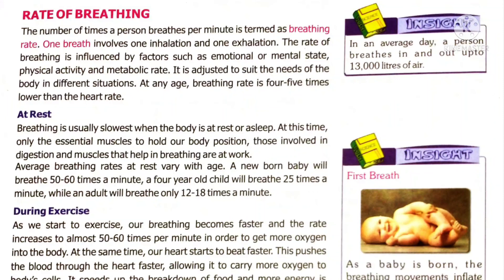Now we move on to the next topic: the rate of breathing. The rate of breathing is the number of times a person breathes per minute. One breath involves one inhalation and one exhalation. The rate of breathing varies based on our activity — if we run or play, our breathing rate increases so that the body gets more oxygen. The breathing rate is four to five times lower than the heartbeat. When we are at rest, our breathing rate will be very low. The breathing rate also varies based on age.